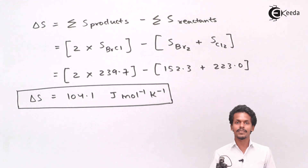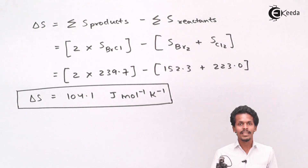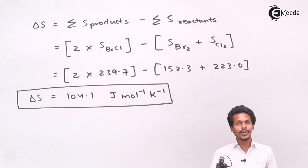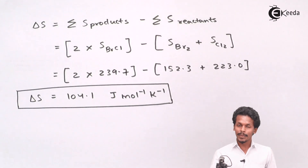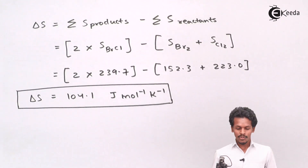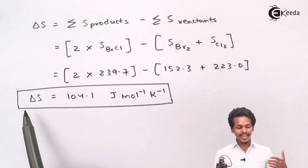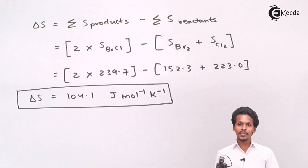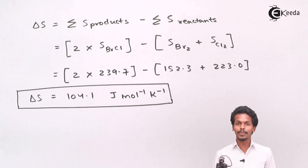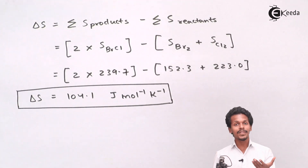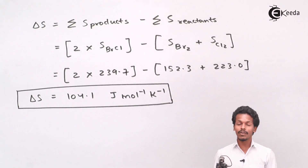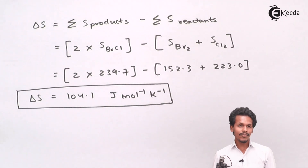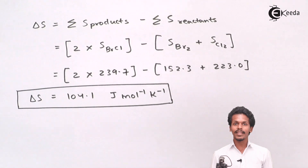Among the Gibbs free energy formulas, there is one relating enthalpy and entropy, and another relating to the equilibrium constant. Since delta H, delta S, and temperature T have all been provided, we will use the formula that incorporates these three quantities.